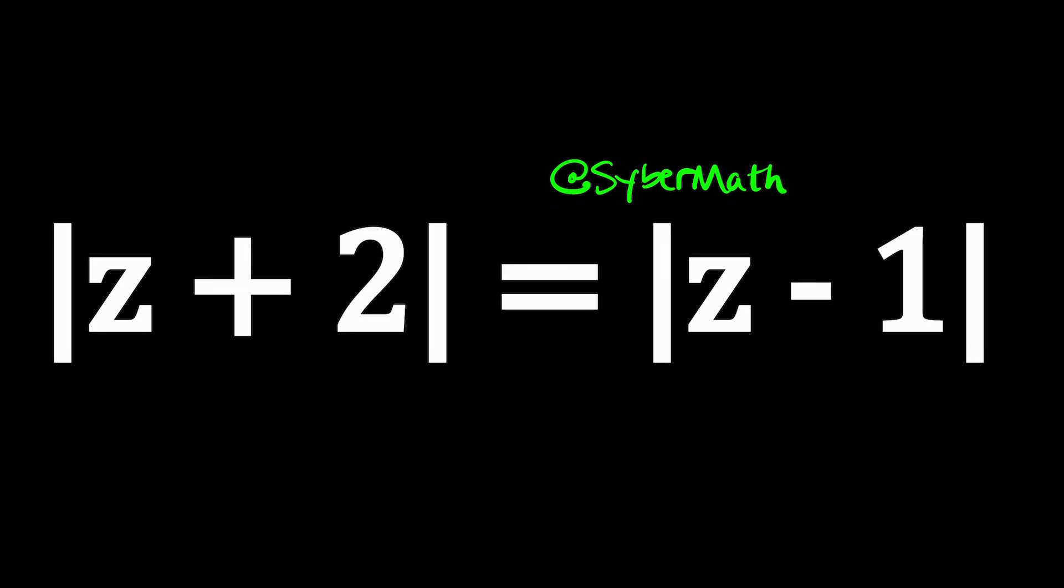But in the case of locus problems, we're going to be basically using a different approach, which is replacing Z with X plus Y I. By the way, how do we know this is a locus problem? Couldn't this be like an equation? Because it is an equation, isn't it? Yes, it is, but this equation has infinitely many solutions. Why? That's a good question, and we'll answer that later, or you'll at least have an idea.